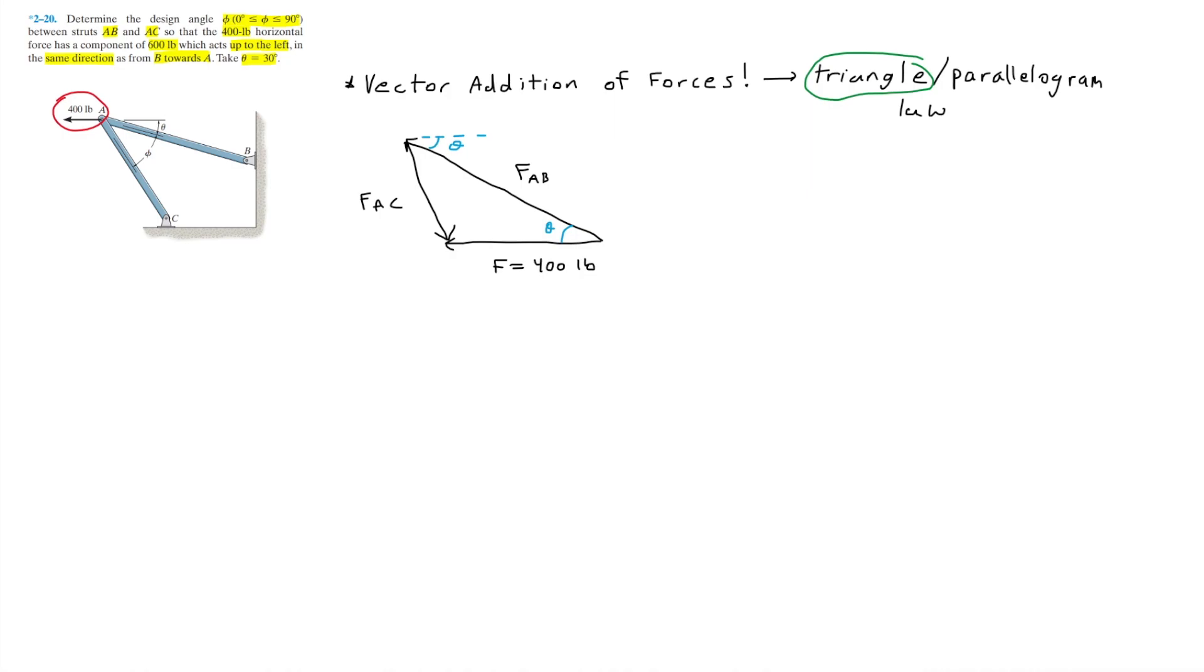So now that we have completed our triangle, we can add the angle phi, which will be at essentially the same location that it's at on the picture. And from the statement, theta equals 30 degrees, so we can simply substitute those 30 degrees for theta.